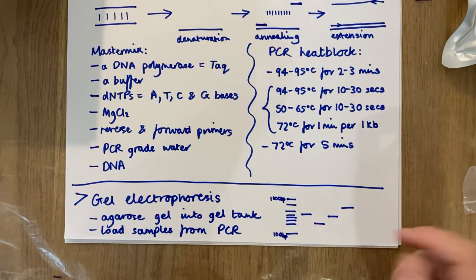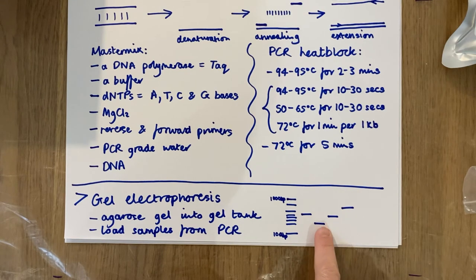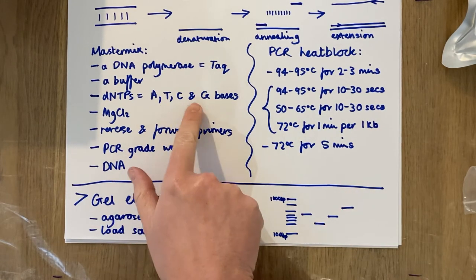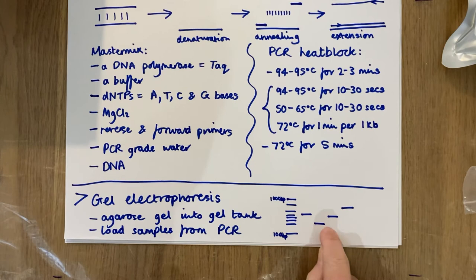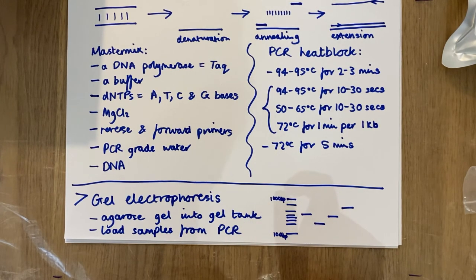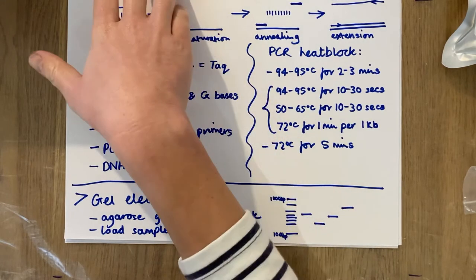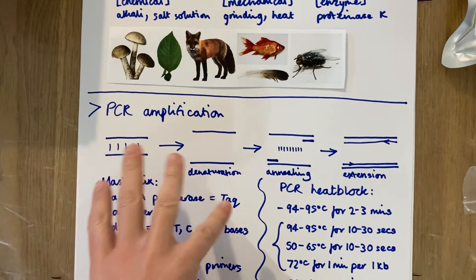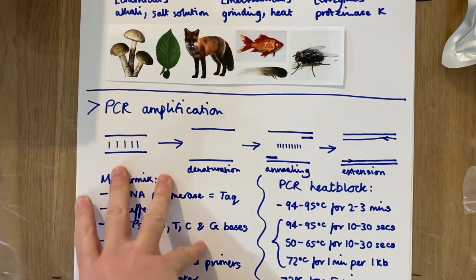Following on from gel electrophoresis there's an optional step of sending your PCR amplicons — your DNA bands — for sequencing. In that case you will receive back the order of the base pairs in your DNA sequence, and you can compare that against online databases to find a match and identify your piece of DNA, which could tell you for example what tissue type it came from if you are using one of our DNA barcoding workflows.